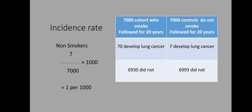Now let us calculate the incidence rate of lung carcinoma among non-smokers. The same number of controls — 7,000 non-smokers — were selected and followed for 20 years. After 20 years, it was observed that 7 of the non-smokers developed lung carcinoma while 6,993 did not. The incidence rate among non-smokers is 7 divided by 7,000 multiplied by 1,000, which equals 1 per 1,000.